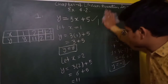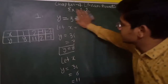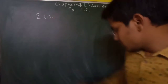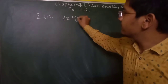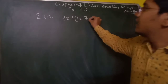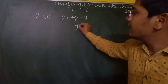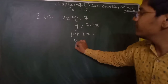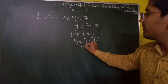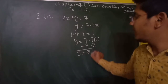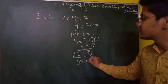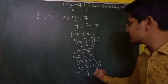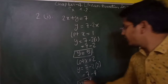Our second question is: we have to write 4 solutions of the given equation 2x plus y equals to 7. We can rearrange it as y equals to 7 minus 2x. Let x equal to 1, so y equals 7 minus 2 into 1, that is 7 minus 2, which equals 5. Let x equal to 2, so y equals 7 minus 2 into 2, that is 7 minus 4, which equals 3.